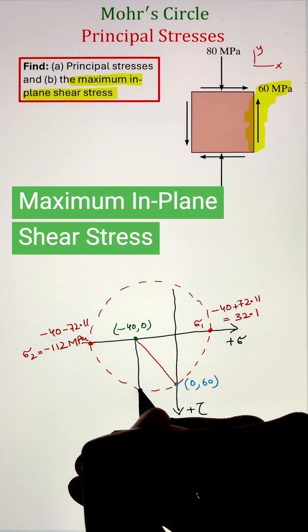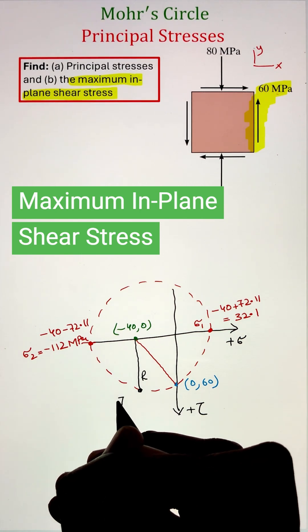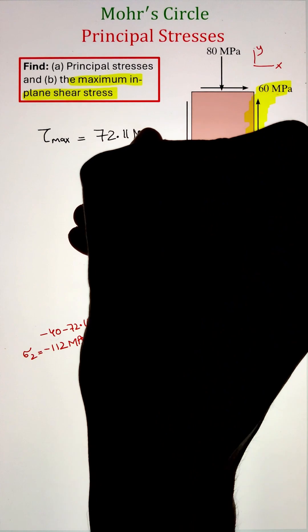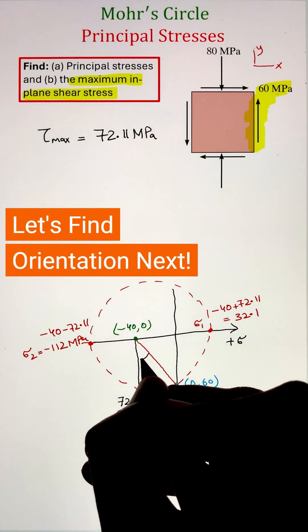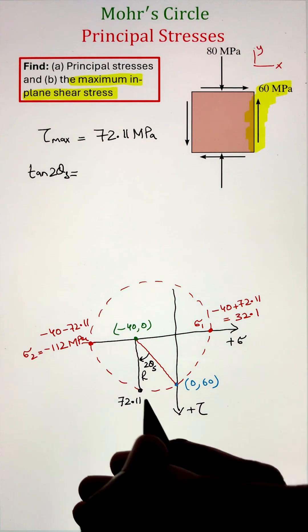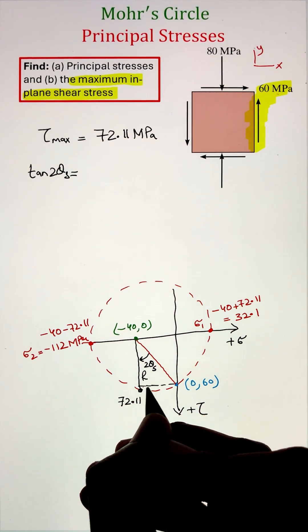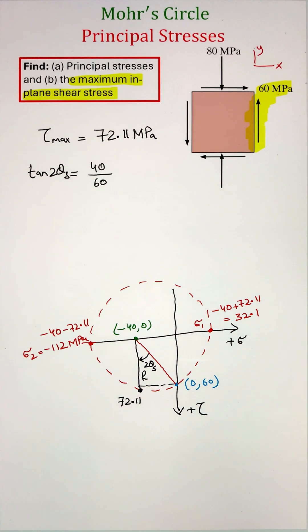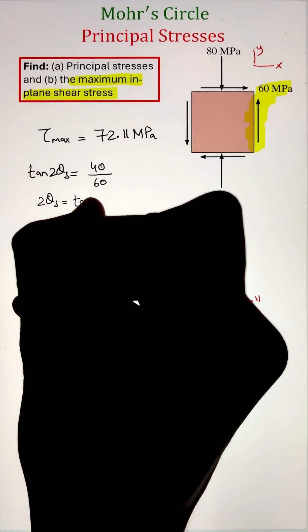Next, the maximum in-plane shear stress can also be calculated from the circle that is the furthest point away on the vertical axis equals to the radius of the circle that is 72.11 megapascal, whereas the orientation of this plane can be calculated from our reference plane as well, measured in the clockwise direction at angle of 2 theta S. Using the trigonometric analysis, we can calculate this angle coming as 33.69.